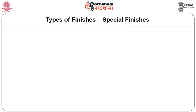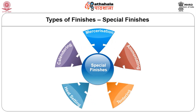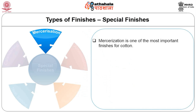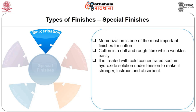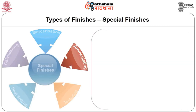The second category is special finishes, applied to selected fabrics based on the properties desired. Mercerization, ammoniating, tentering, heat setting and calendaring are the special finishes. Mercerization is one of the most important finishes for cotton. Cotton is a dull and rough fiber which wrinkles easily. It is treated with cold concentrated sodium hydroxide solution under tension to make it stronger, lustrous and absorbent. As absorption is increased, it improves dye affinity, producing brighter shades than unmercerized cotton. This is a durable finish.